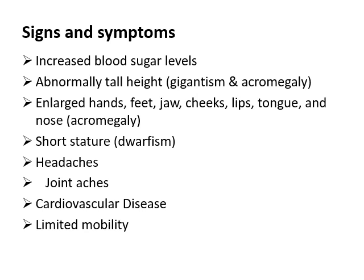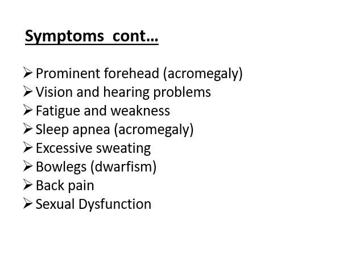The signs and symptoms associated with both dwarfism and gigantism include increased blood sugar levels, abnormally tall height in gigantism and acromegaly, enlarged hands, feet, jaw, cheeks, lips, tongue and nose, short stature in dwarfism, headaches associated with abnormal hormone secretion, joint aches, and a predisposition to cardiovascular diseases. In both gigantism and dwarfism, mobility is decreased or limited. Some other symptoms are also associated with these two conditions.